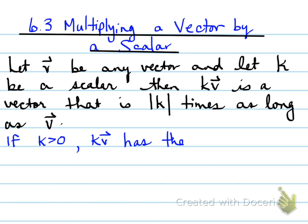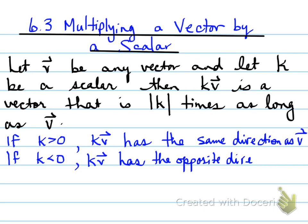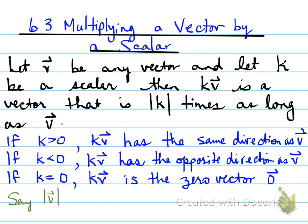If k is greater than 0, then k times vector v has the same direction as vector v. If k is less than 0, then k times vector v has the opposite direction as vector v. If k equals 0, k vector v is the zero vector.